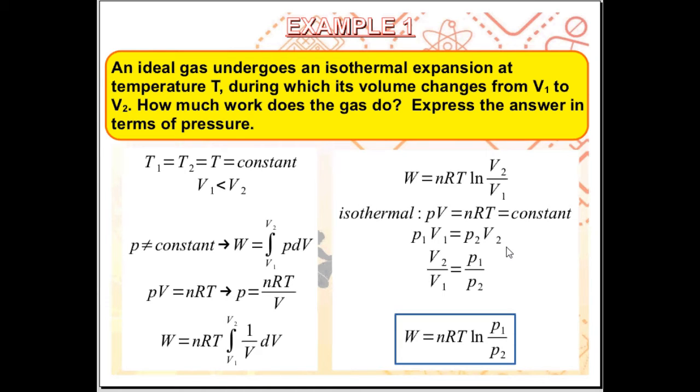Rearranging, we can get V2 over V1. V2 over V1 is equal to P1 over P2. Substituting into our equation for work, we have our final answer. Work, W is equal to nRT Ln of P1 over P2.